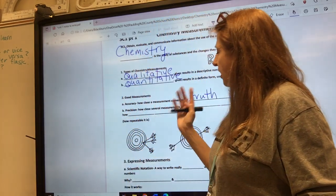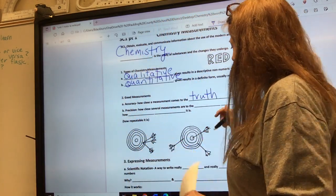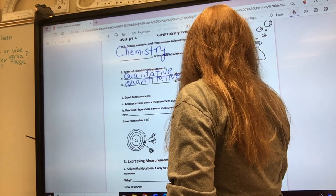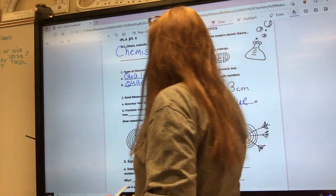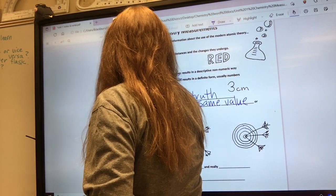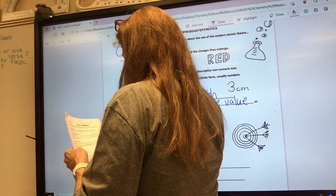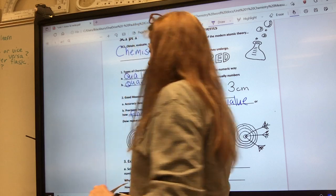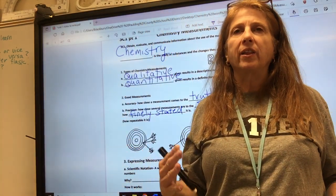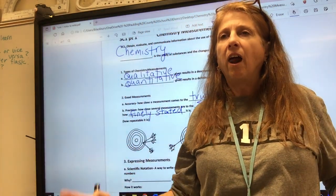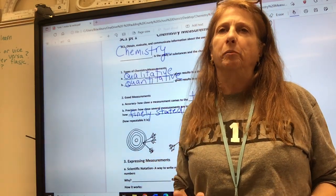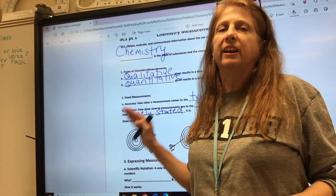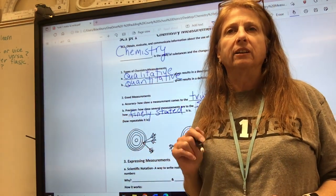Precision is how close several measurements are to the same value or how finely stated it is. So like if I have a measurement that it is 1.2467 it sounds like a really good measurement but if I took it on a broken balance it might be finely stated and precise but not accurate.